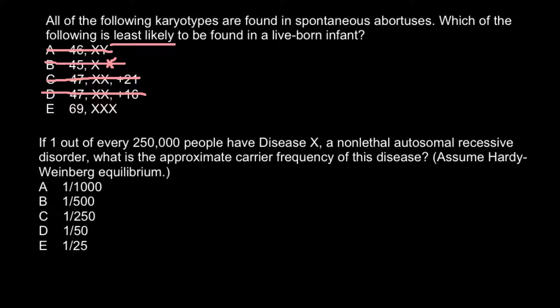As I said, triploidy can happen in plants. Many plants are triploid — for example, seedless watermelon, banana, pears, apples, and seedless grapes are all triploid. But such a condition is not tolerated in humans, so this would be the most rare condition among the answers. Therefore, our answer is Answer E.